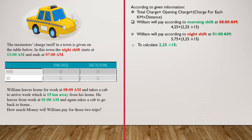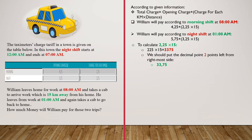Now let's calculate the decimal operations. To calculate 2.25 multiplied by 15, we should first multiply 225 by 15, and we know that it's equal to 3375. Now we should put the decimal point 2 places left from the rightmost side, because the denominator of the result is 100. So the result is 33.75.